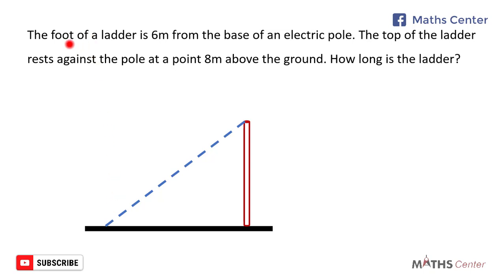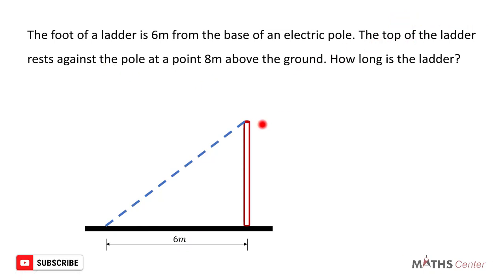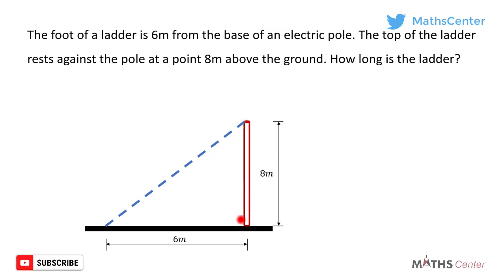The question tells us that the foot of the ladder is 6 meters from the base of the pole, so the distance between the base of the pole and the foot of the ladder is 6 meters. It also tells us that the top of the ladder, which is this part, rests against the pole at a point 8 meters above the ground. So the distance between the top part of the ladder and the ground is 8 meters.